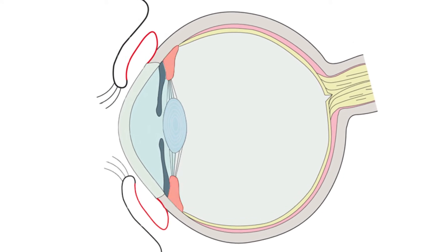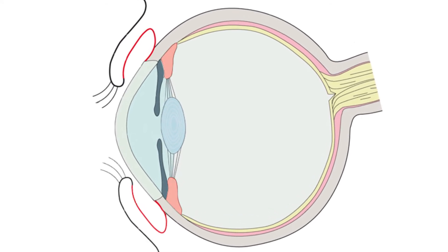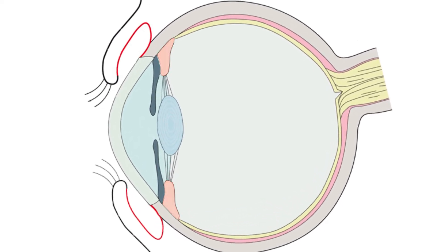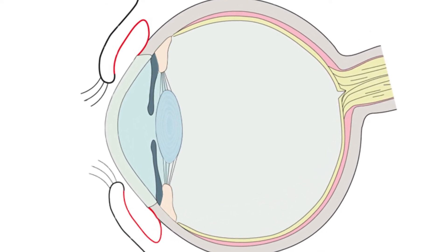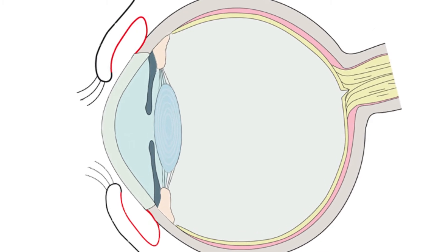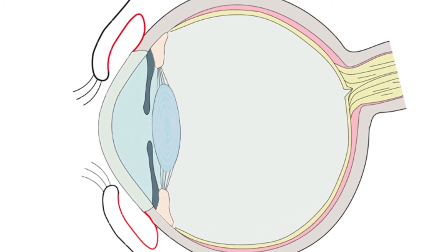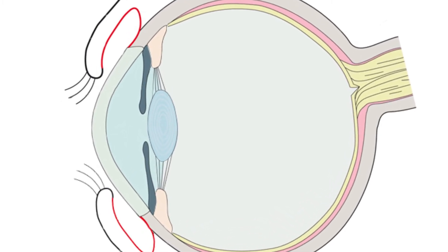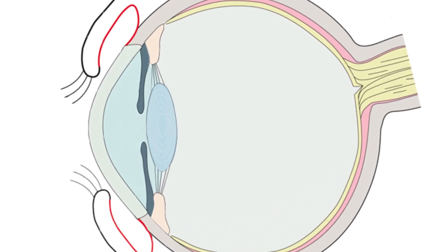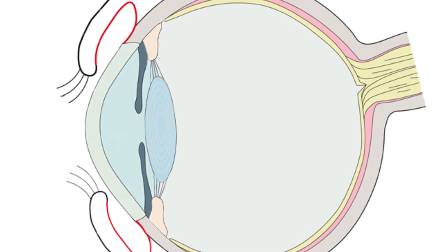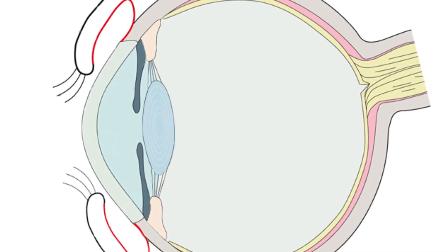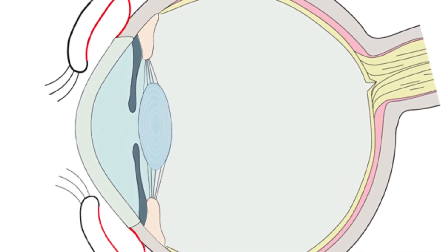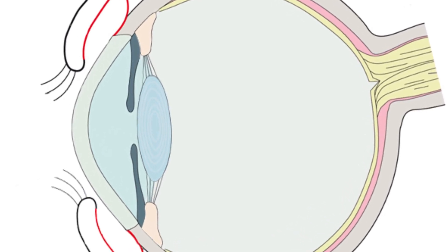Ciliary body: the structure that produces aqueous humour. Contraction of the ciliary muscle changes tension on the zonular fibres that suspend the lens and allow the eye to focus from distant to near objects — accommodation.